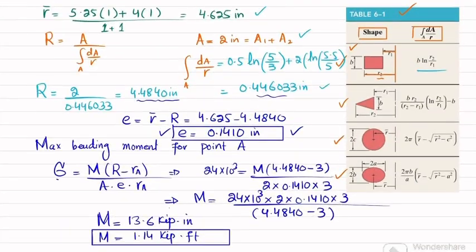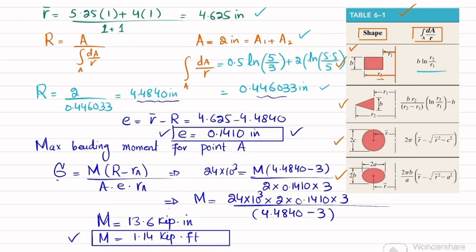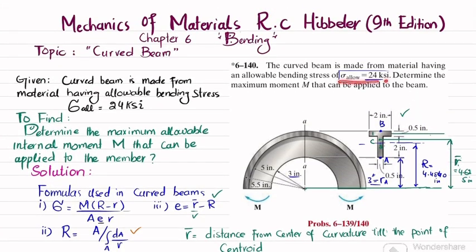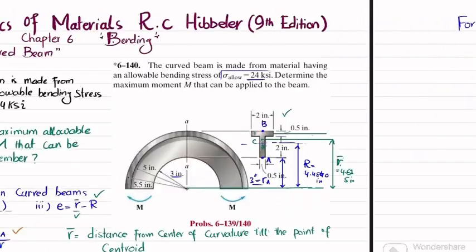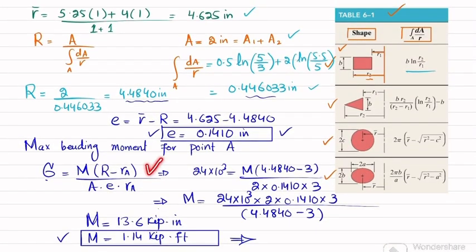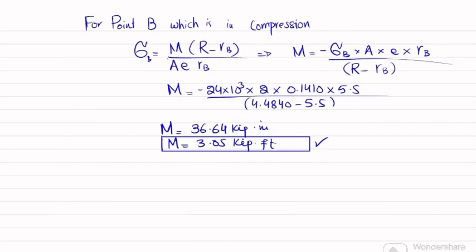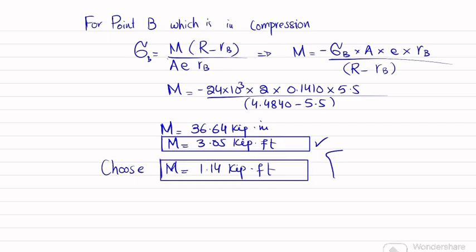We now have two values: M = 1.14 kip·ft based on point A in tension, and M = 3.05 kip·ft based on point B in compression. We must choose the smaller value, because using the larger value would exceed the allowable bending stress at point A, causing failure. Therefore, the maximum allowable moment is M = 1.14 kip·ft.